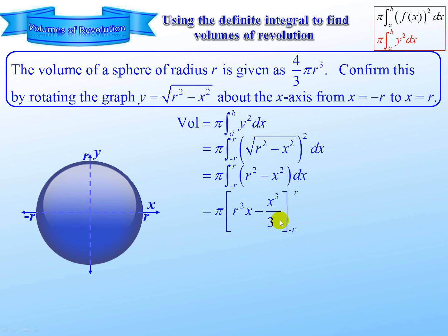Substitute r, subtract, substitute negative r. And doing the algebra, we end up with 4 thirds pi r cubed. Isn't science wonderful.